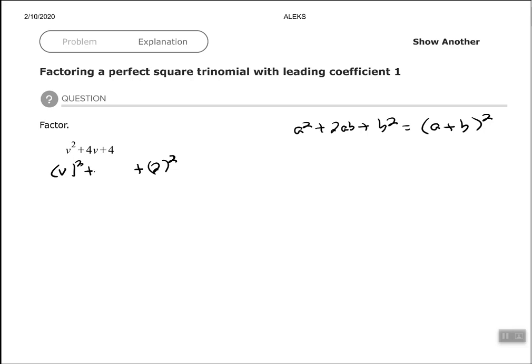Then you need to check the middle to make sure that it's 2 times in this case 2 and v. So 2 times 2v. You need to make sure that the middle adds up or is